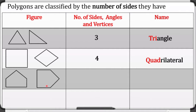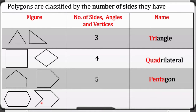Next, this polygon has five sides, five angles, and five vertices, and we call this a pentagon — 'penta' means five. Next is this one: six sides, six angles, and six vertices — we call this a hexagon.